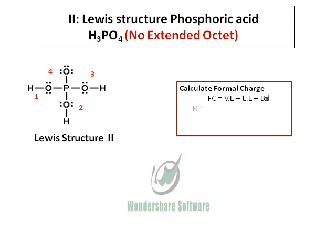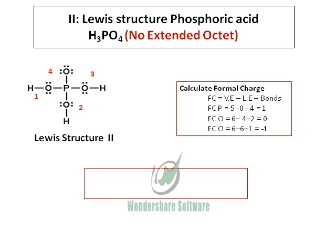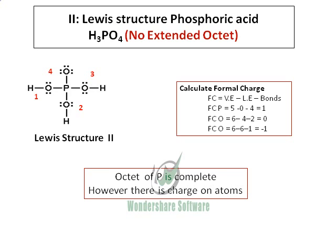When you calculate the formal charges, the formal charge on phosphorus comes to +1, and the formal charge on oxygens 1, 2, 3 comes to 0, but the formal charge on oxygen 4 comes to -1. On the whole, the molecule is neutral. But in Lewis structure 2, it has not extended its octet but has a formal charge. The octet is complete — just 8 electrons, 4 bonds around it — however, there is charge on the atoms.